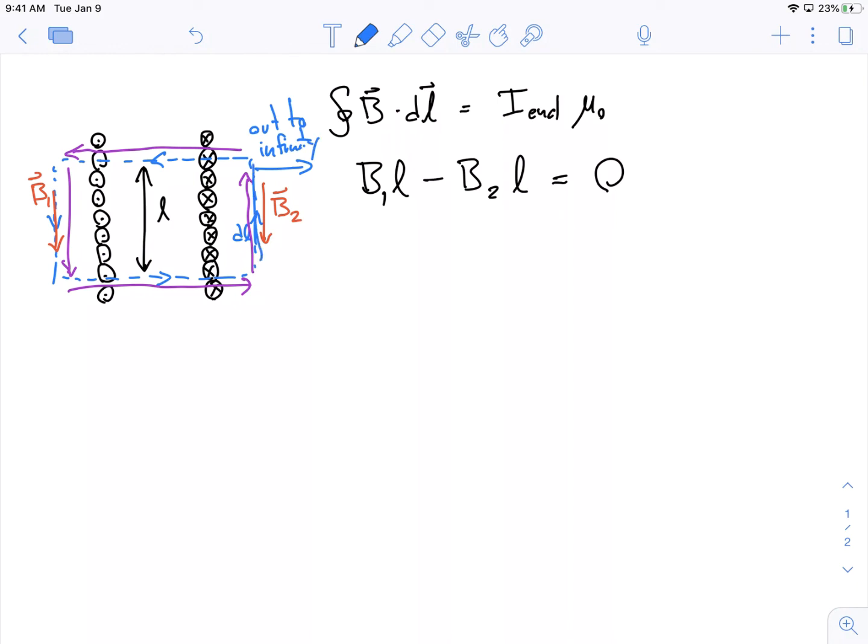So, I can make this line of the loop just be way out at infinity. So, this equation has no distance dependence to it. So, what that means is that if this is way out to infinity, when I'm infinitely far away from the solenoid, I expect B2 to be equal to zero. I expect there to be no magnetic field way out at infinity.